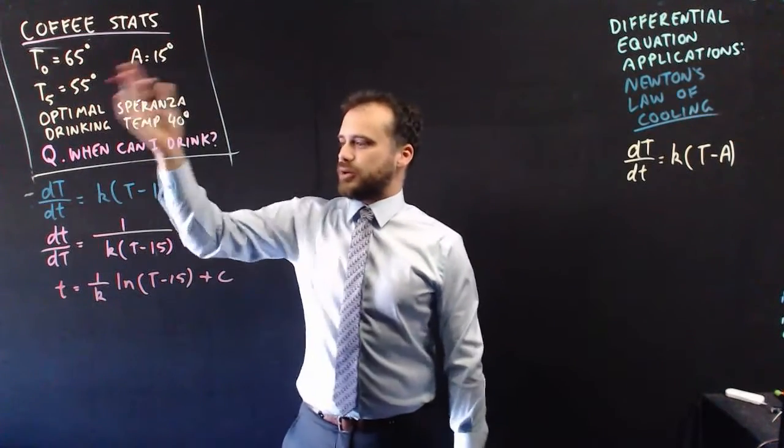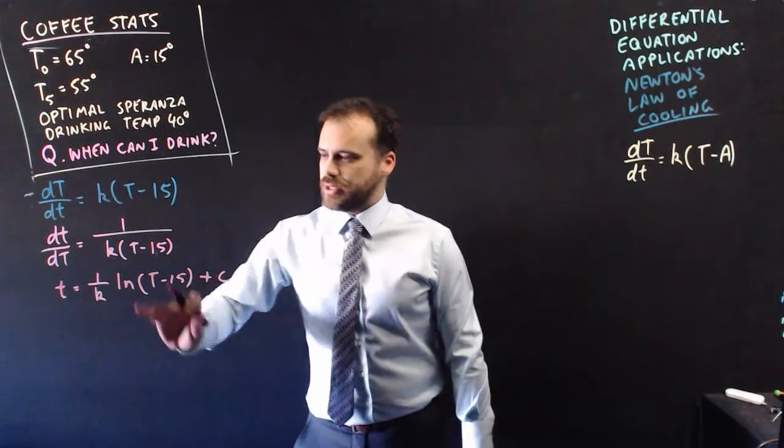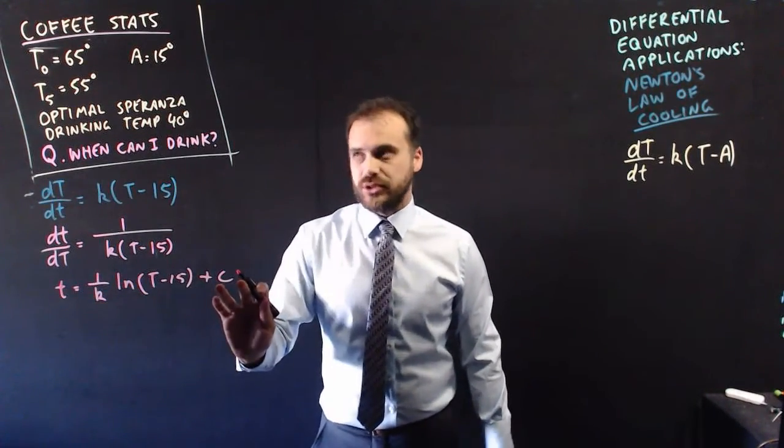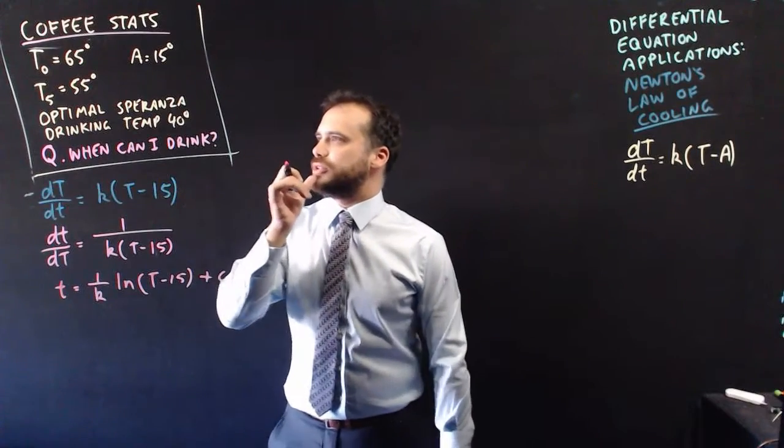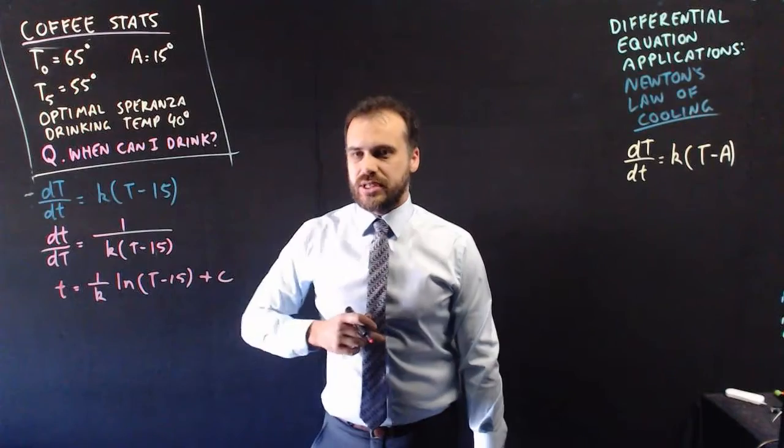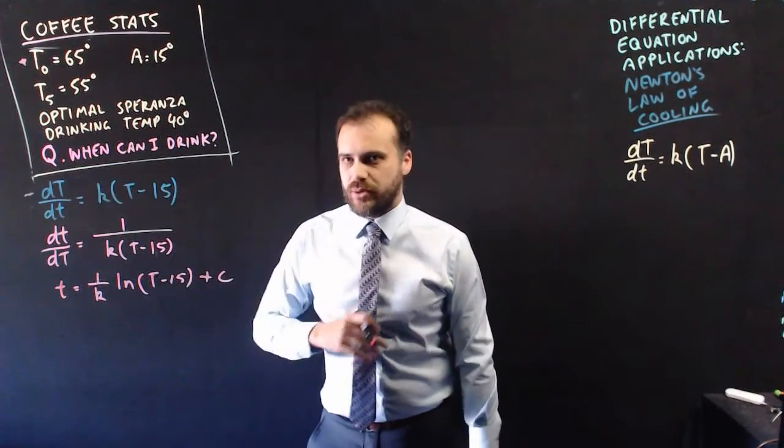Alright, so let's look back at our question. What we have now is a solved equation that gives us a formula in terms of temperature and time. We've still got a constant here. Now, what did I tell you? I told you that at time 0, the temperature was 65 degrees. So let's sub this piece of information into our equation.